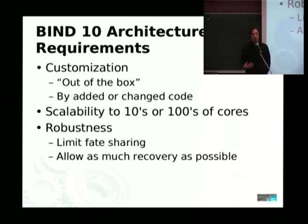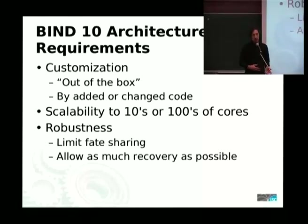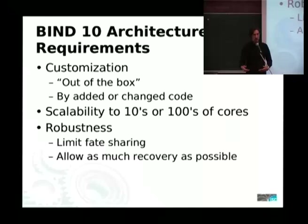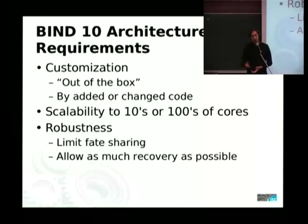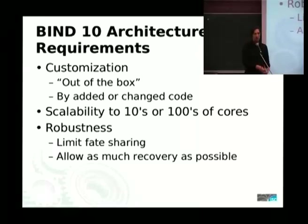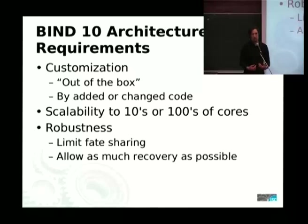So we decided we're going to write Bind 10. There are a few requirements which went into the architecture. We want it to be customizable — both out of the box, where you just install it and can change it to run only the pieces you want, and also so that you can add or change the code easily. I mentioned scalability to tens or hundreds of cores. And then the obvious one is robustness — we want to avoid the problems we had with Bind 9, limit the shared fate I just discussed, and if a problem is discovered, allow the system to recover as much as possible.